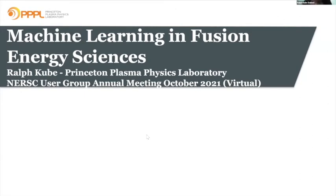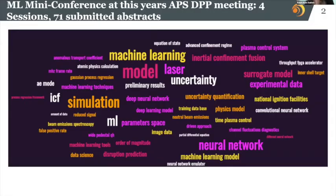My name is Ralf Kuber. I'm a research physicist at the Princeton Plasma Physics Laboratory, and I will talk a little bit about machine learning in fusion energy sciences. When I was asked to do this presentation, I really had to go back and think what I was going to present, because I certainly am a machine learning practitioner in fusion energy sciences, but it is quite a large field.